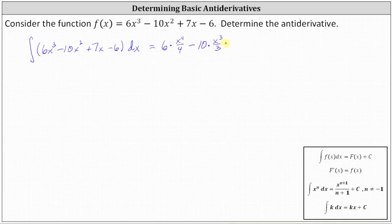Then plus the antiderivative of 7x, or 7x to the first, which is equal to 7 times the antiderivative of x to the first. Now n = 1, and therefore the antiderivative is x² divided by 2.